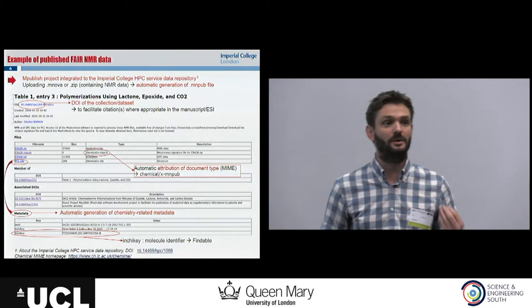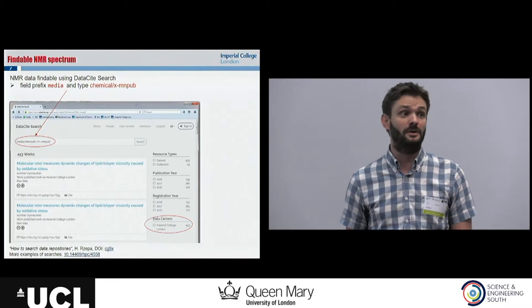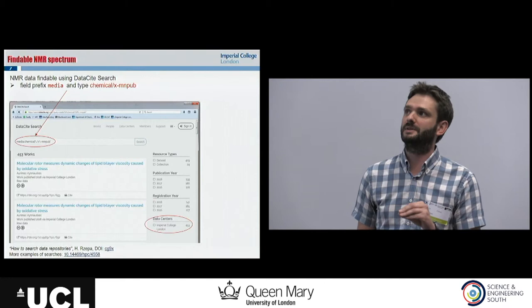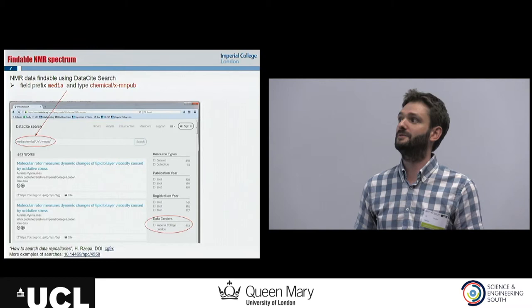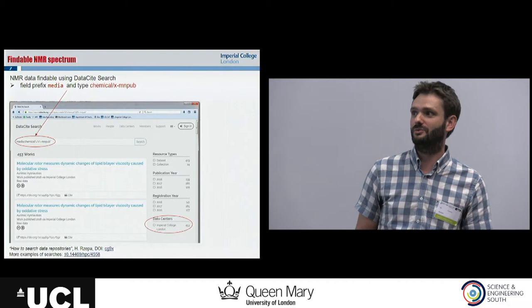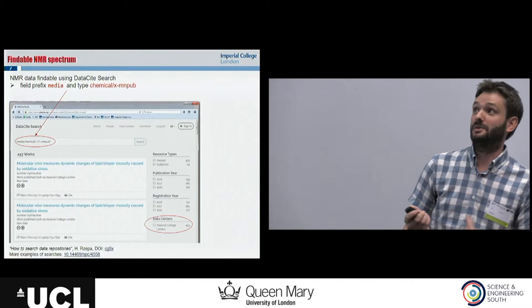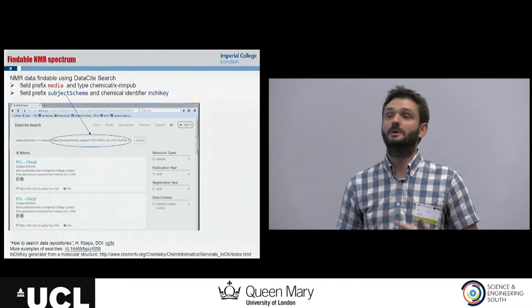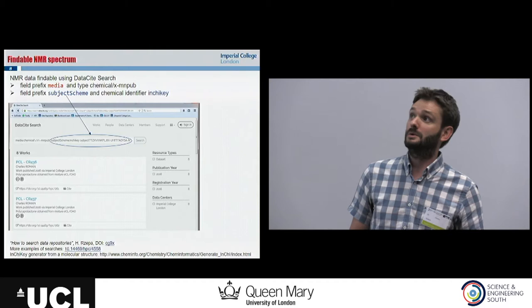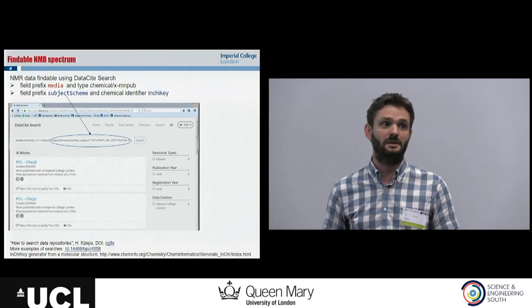Quick example: using the DataCite search engine — a metadata search engine — and using, for example, the type of data, in our case an MNPUB file, we can see that there are already 453 files of that type published, all from Imperial College. We can cross-search and say, 'I want all the NMR spectra corresponding to one specific molecule.' For that, I will use the InChI. The InChI has been automatically generated in the data, so I put the type and the molecule I want. And in that case, I found only eight datasets corresponding to that molecule and this type of NMR spectra.